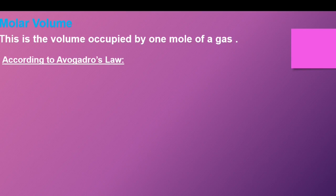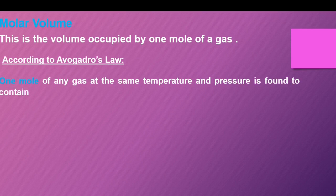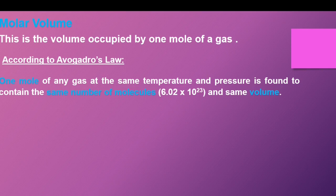According to Avogadro's law, one mole of a gas at the same temperature and pressure is found to contain the same number of molecules — 6.02 times 10 to the power of 23 — and the same volume. This means that if you take one mole of oxygen and one mole of hydrogen at the same temperature, these two gases will contain the same number of molecules and will also occupy the same volume.